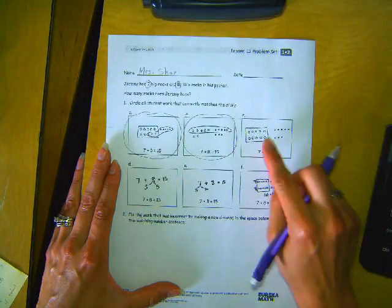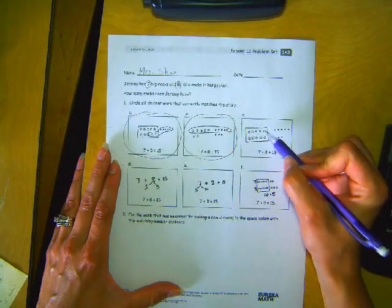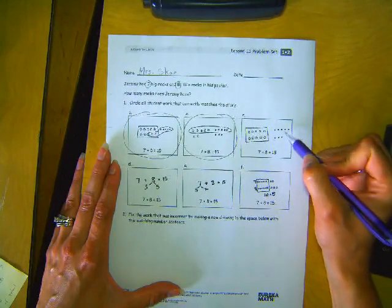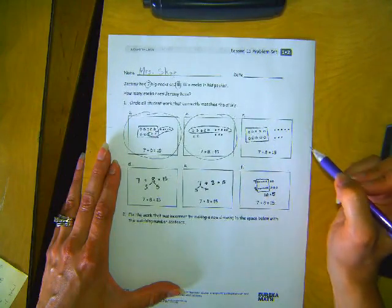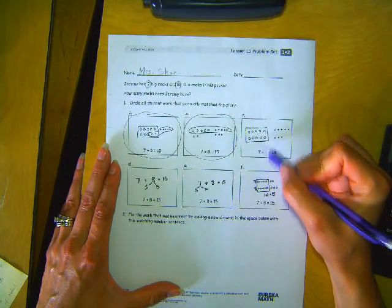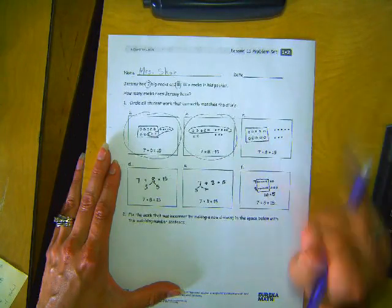How about this one? Seven plus eight equals fifteen. Well, yikes, look at this. I see ten in there and then I see eight over here. So I already know this is not matching up. I'm not going to circle that one.